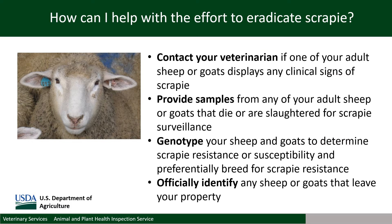How can you as a producer help with the effort to eradicate scrapie? First, if you notice that any of your goats or sheep are showing clinical signs of scrapie, such as incoordination, tremors, or wobbliness, contact your veterinarian right away. They can counsel you on the best test to determine what is wrong with your animal and whether scrapie is a potential cause of the signs. Also, samples from any sheep or goats that die or are slaughtered on your premises, even if they appear to be healthy, are valuable for scrapie surveillance. Genetic testing on sheep and goats can determine if their genetic makeup makes them relatively resistant or susceptible to scrapie. Scrapie-resistant animals can be preferentially chosen for breeding, or susceptible does or ewes can be bred to resistant rams and bucks to increase the resistance of their offspring and your herd or flock to scrapie.